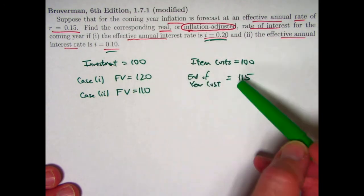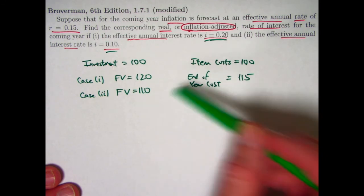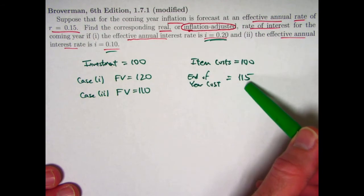So in case one, you can still buy it with some money left over, and in case two, your money, even though it's grown in a nominal sense, the buying power has gone down, you cannot afford this item anymore.